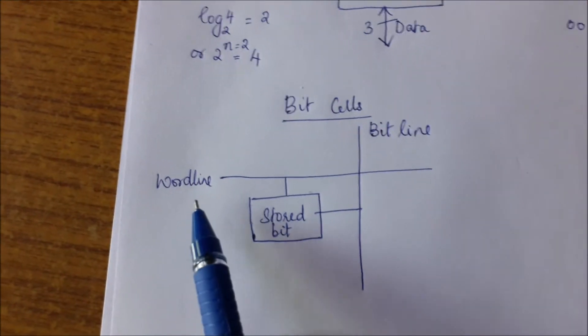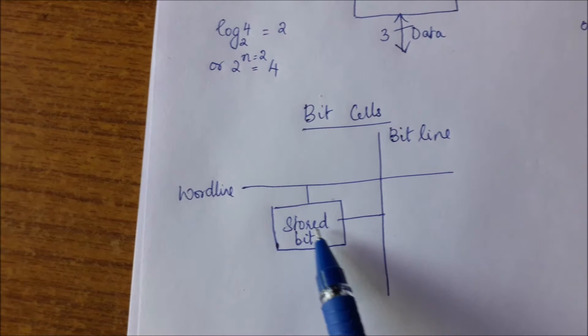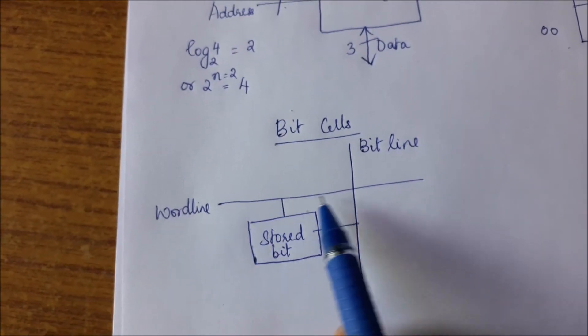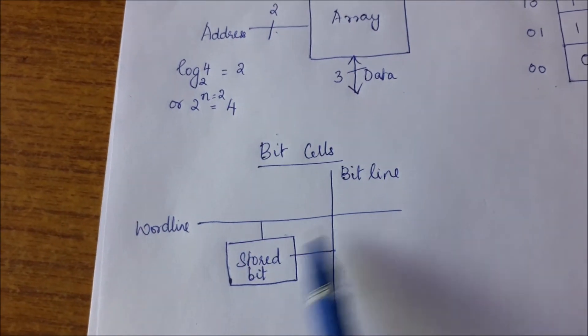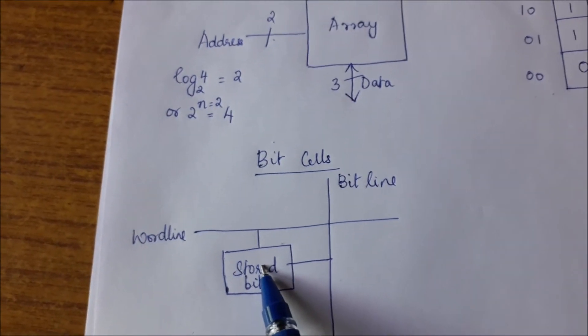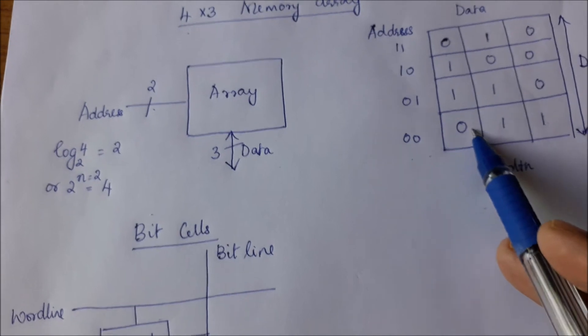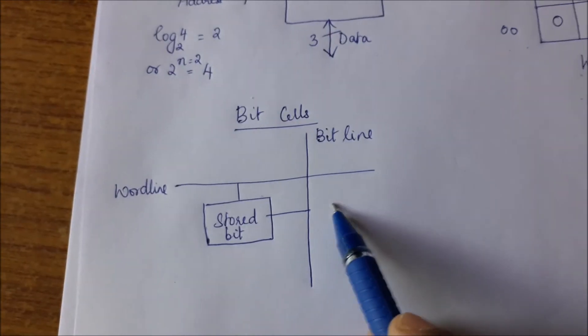For that reason, to access each of the bit cells, I have what is called a word line. The word line is associated with this address. So the word line allows me to access a particular bit cell. Each of these cells is called the bit cell.